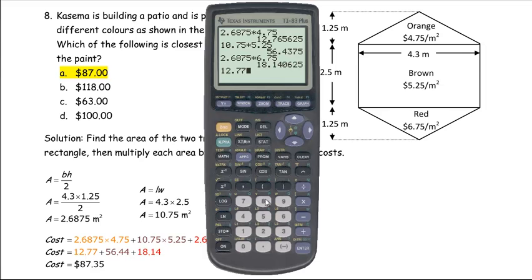$12.77 plus $56.44 plus $18.14. Let's make sure that is all right. It is $87.35.